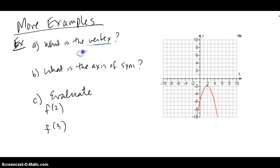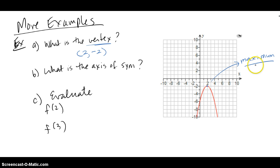So all they're asking for is the ordered pair 2, negative 2. I'm sorry — I said minimum earlier, but I meant maximum. It's opening downwards so it has a maximum, and the maximum is actually the y value, which in this case is negative 2. All other y values are smaller than negative 2 — that's the biggest it ever gets.